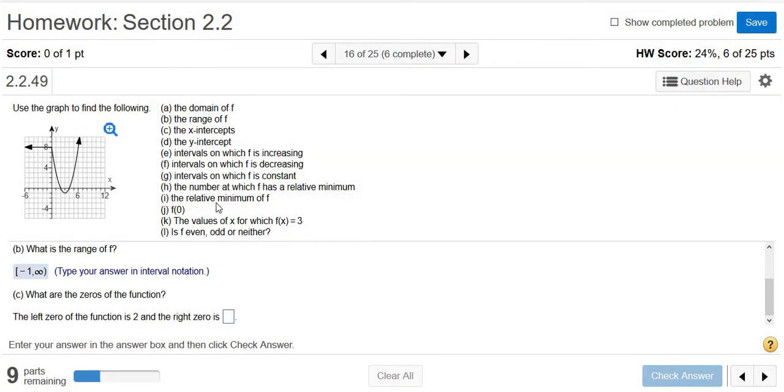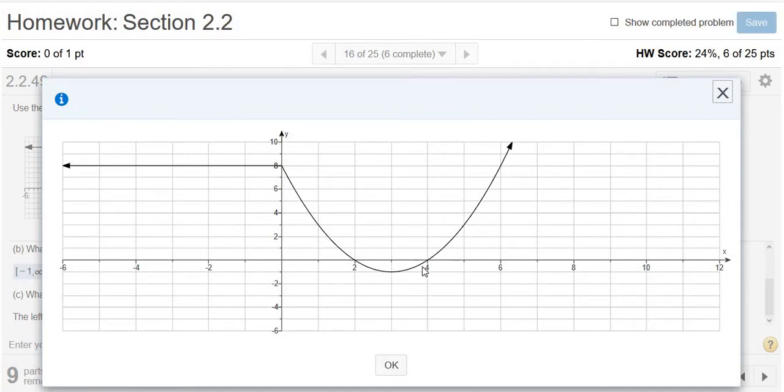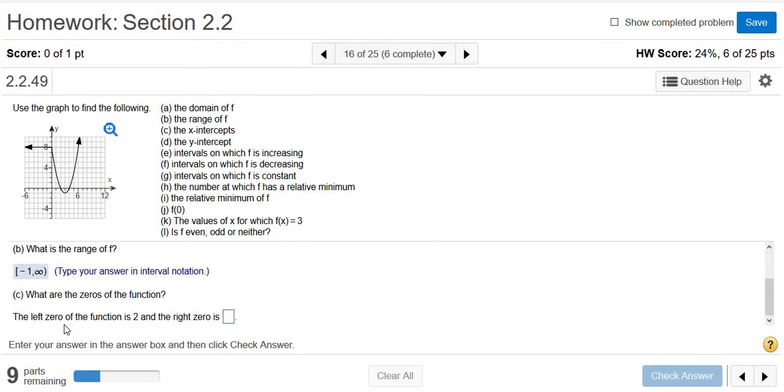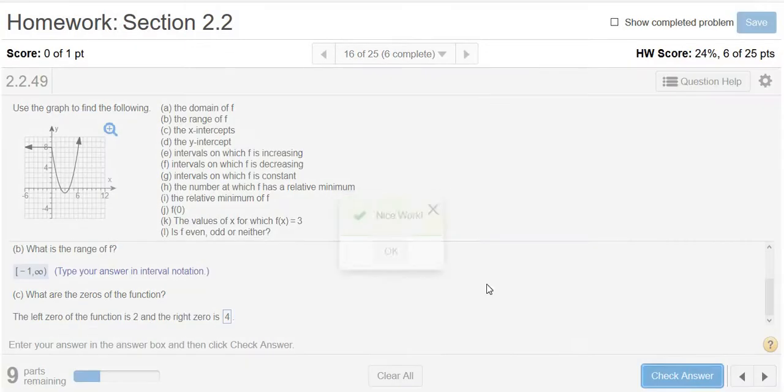The x-intercepts. The x-intercepts are where the graph crosses the x-axis or touches it. It looks like 2 and 4 are the x-intercepts. That's where the graph touches or crosses the x-axis. It says the left zero of the function is 2 and the right zero is 4.